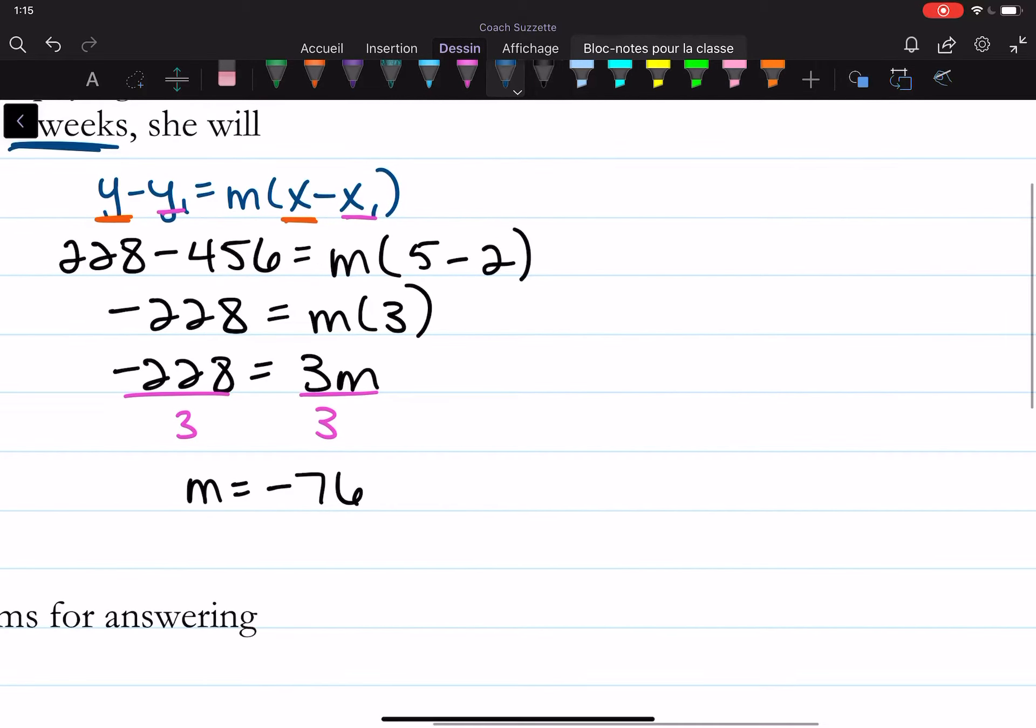Well, we can again use point-slope form. And I'll show you how. y minus y-sub-1 is equal to m times the quantity x minus x-sub-1.